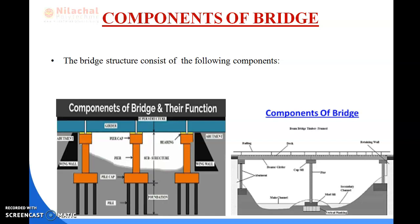Next we discuss parapets and handrails. In this picture you can see the railing, which we call handrails and parapets. These components of bridges are not of structural importance but provide for safety. These are provided above the deck and help prevent vehicles from falling off the bridge into the water body below.